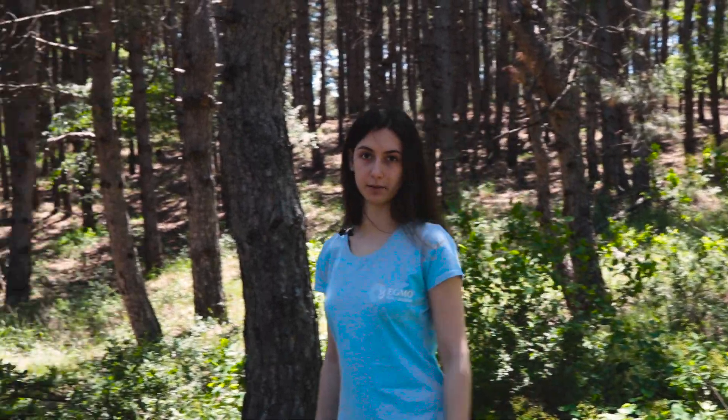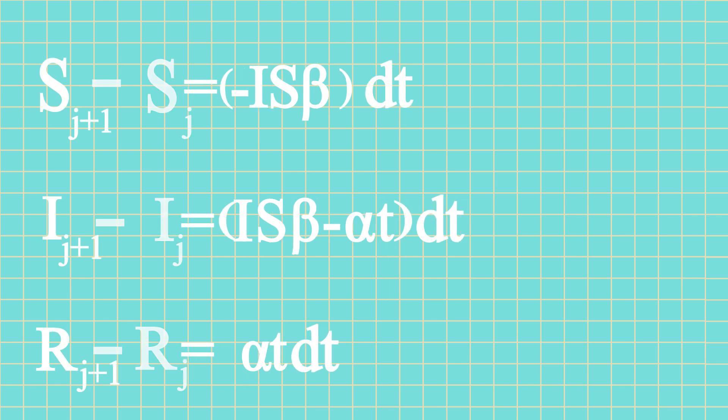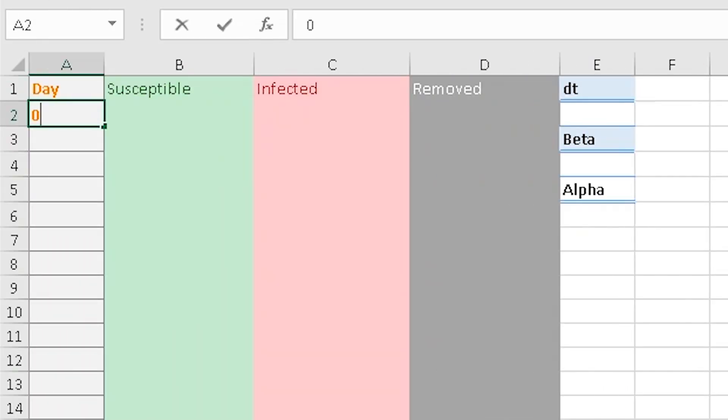As we have our calculations, let's test them in Excel with some hypothetical numbers. To get the j-th person value, we need to know the i-th value first. Let's start from day 0. Say that the fraction of susceptibles is 0.999 and of infected 0.001. Set the differential of time to 1 day, assign 0.8 value to beta and 0.1 to alpha.